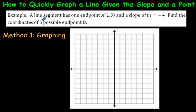We're going to have a question. The question says, a line segment has one end point as 1, 3, and the slope is negative 5 over 2. By the way, the slope is often written with the letter M. Find the coordinates of a possible end point B. Well, let's just follow what we just did on the other page. Start with this point here: 1 over and 3 up. So 1 over and 3 up. Here we are.